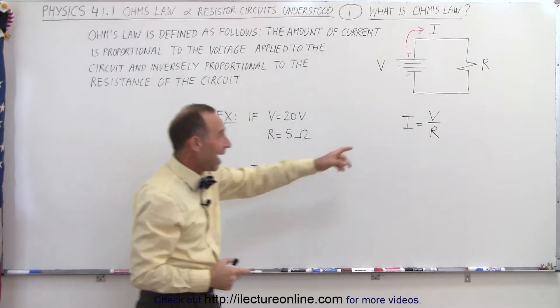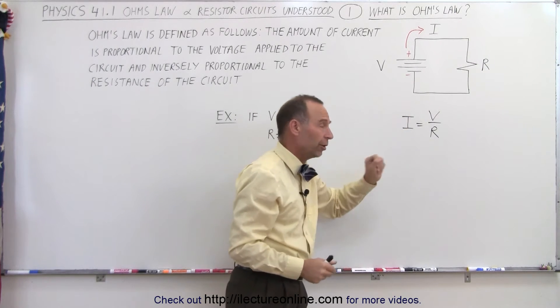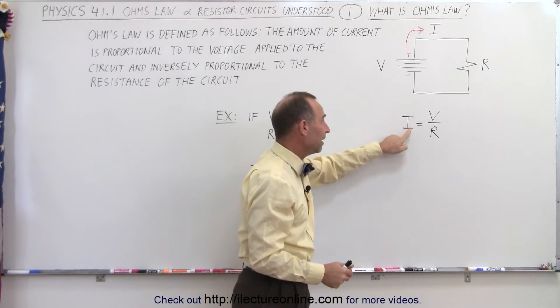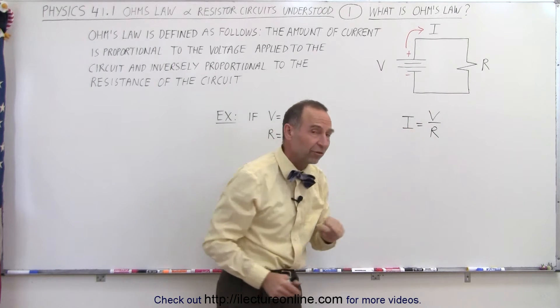In other words, I is equal to V over R. The amount of current flowing through the circuit is proportional to the voltage and inversely proportional to the resistance in the circuit.